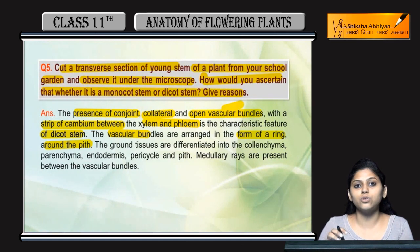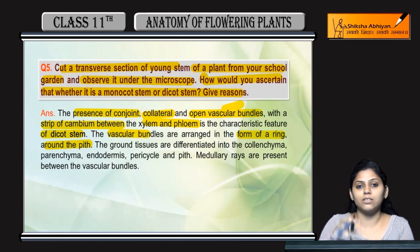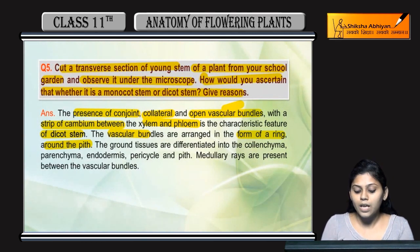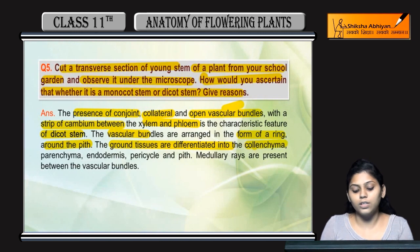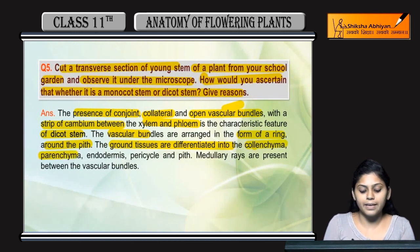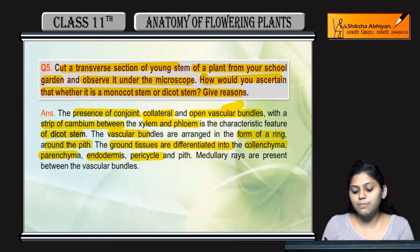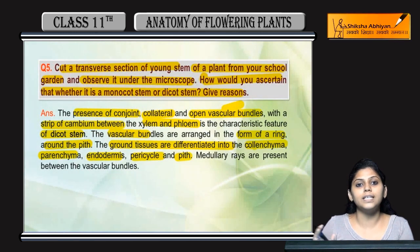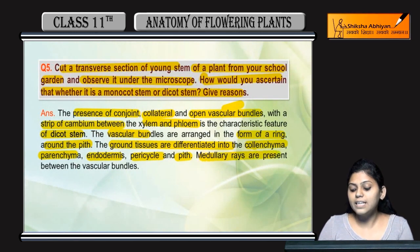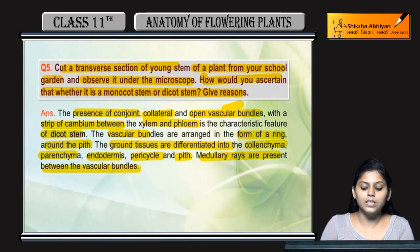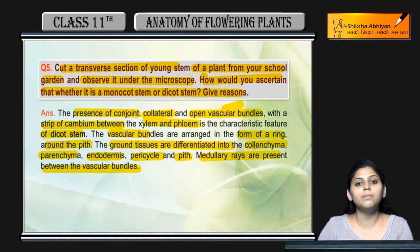The pith is the central tissue. The ground tissue is differentiated into different layers: collenchyma, parenchyma, endodermis, pericycle, and pith — all these tissues are differently differentiated. Medullary rays are present between the vascular bundles.